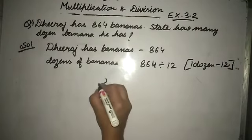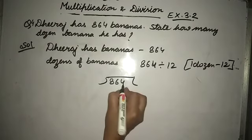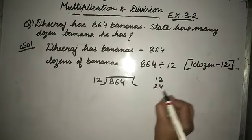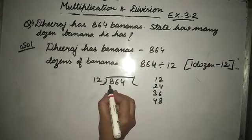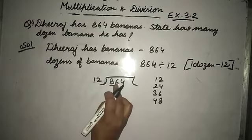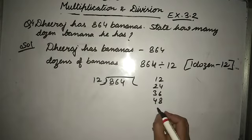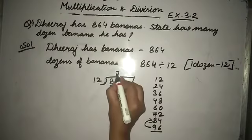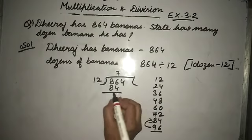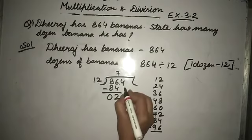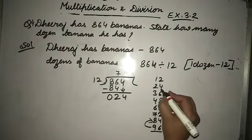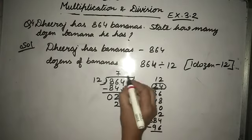864 divided by 12. So first write down the table: 12×1=12, 12×2=24, 12×3=36, 12×4=48, 12×5=60, 12×6=72, 12×7=84, 12×8=96. 96 is more than 86, so we will take 84, equals 7 times. 12×7=84. Subtract: 6 minus 4 is 2, 8 minus 8 is 0. Next number 4. Then 12×2=24, exact number we have got. Write down 2 here. Remainder is 0.